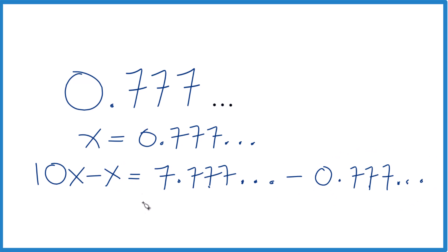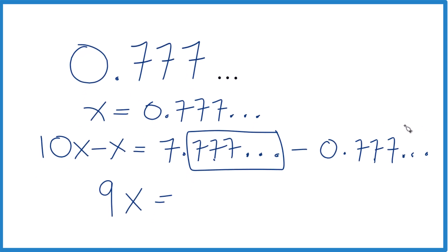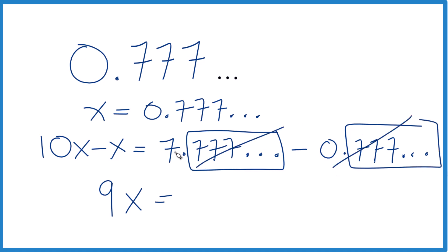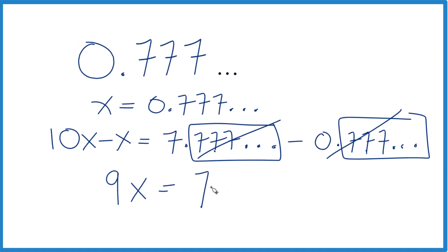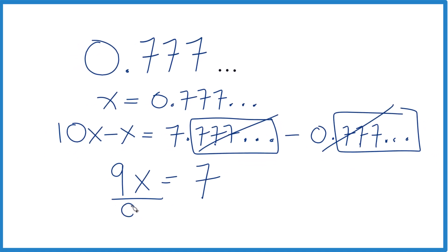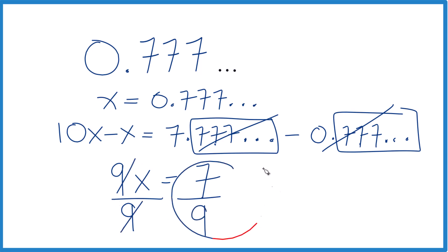Now 10x minus x is 9x, and this part over here is the same thing, so when we subtract we get 0 — that's all gone. We have 9x equals 7. Divide both sides by 9, and we get x equals 7 ninths. So when we convert 0.777 repeating to a fraction, we get 7 ninths.